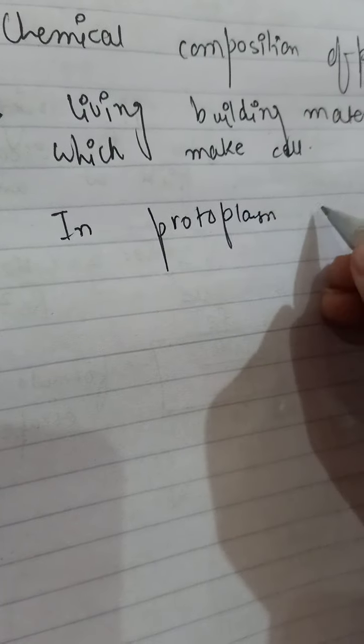In protoplasm generally, there is 70 to 90 percent water.